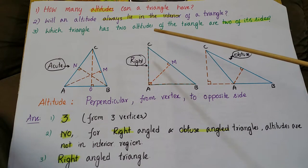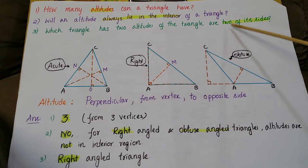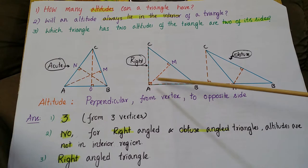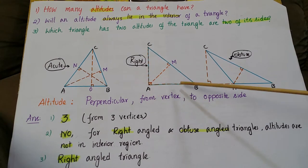Third one, which triangle has two altitudes of the triangle or two of its sides? I have already told just now. This triangle, right angle triangle, the altitudes are two of its sides.